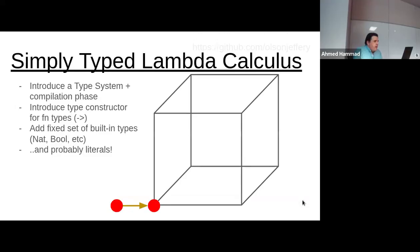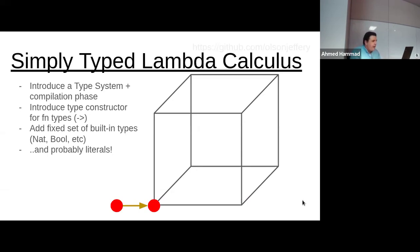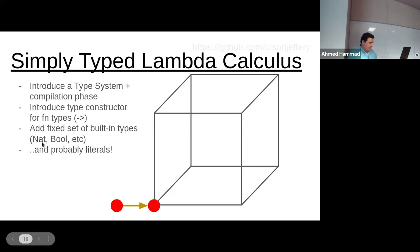Moving on to the simply-typed lambda calculus. Because of Curry's Paradox, Alonzo Church devises and introduces the concept of a type system. The terms that are expressed now have types that are associated with but separate from their values. We introduce the concept of type constructors — the first is for making function types. We'd also introduce a fixed set of built-in types like the natural numbers, booleans, and literals.